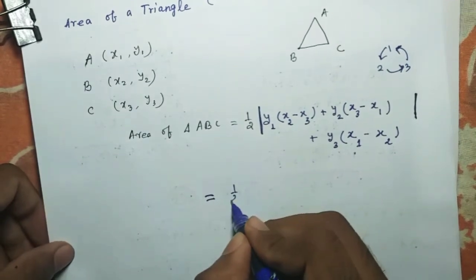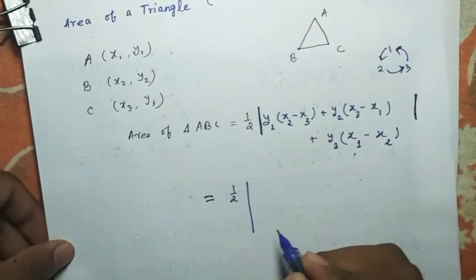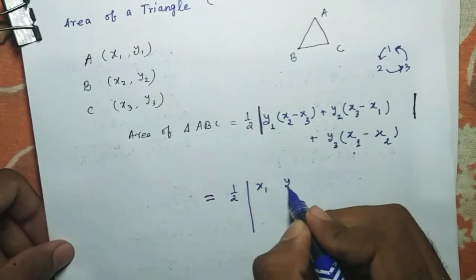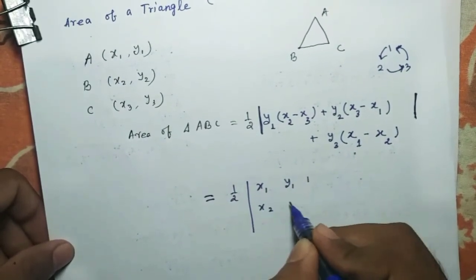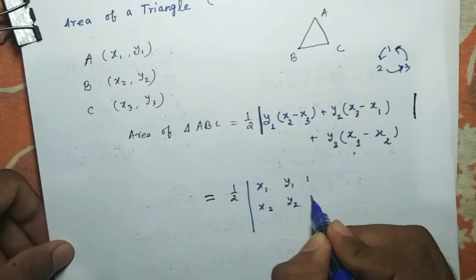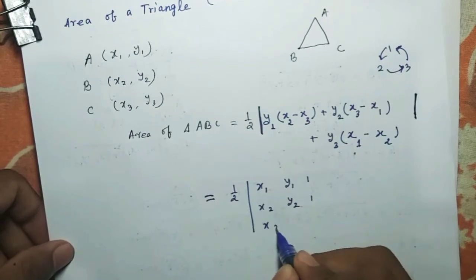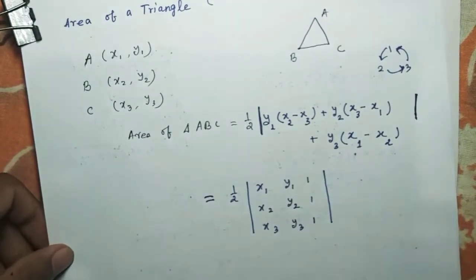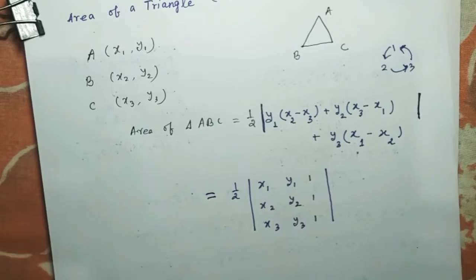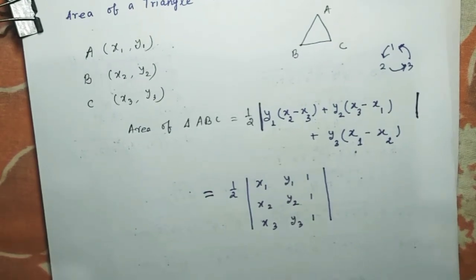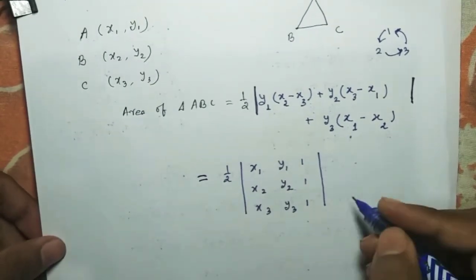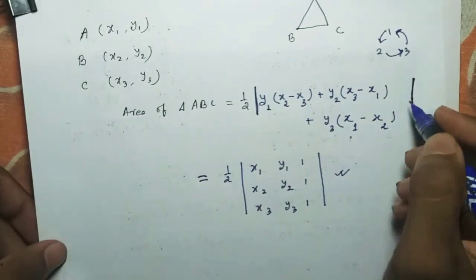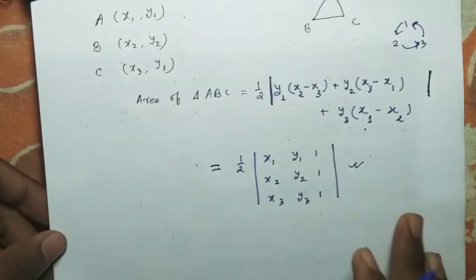The next format is the determinant form: half times the determinant with rows (x1, y1, 1), (x2, y2, 1), (x3, y3, 1). Since we have not yet covered the topic of matrices and determinants, we will not use this formula right now.